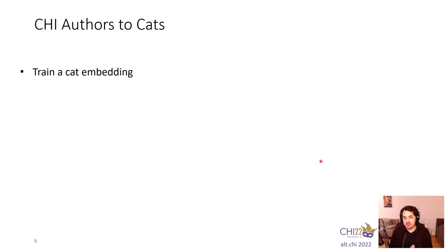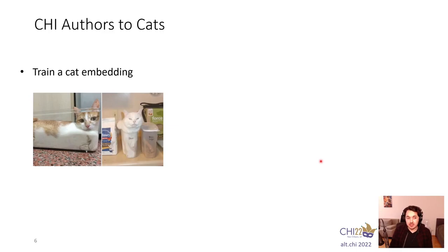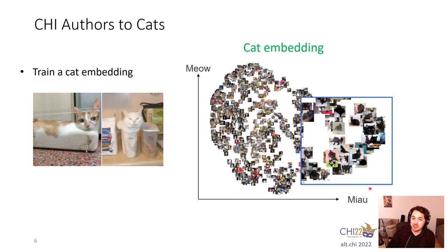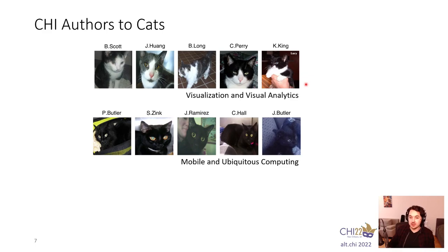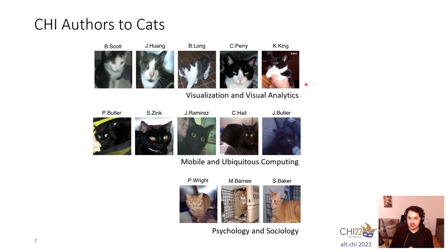Let's look at a different example: authors to cats. First, we need to train a cat embedding. Cats are very easily embedded, so it's quite straightforward. We get a nice space where similar cats are mapped to nearby points with low distances between them, and we can use this for a metaphor. As a result, we get clusters — for example, a white-gray-black cluster, where all the authors are working in visualization or visual analytics. Similarly, there's a cluster of black cats corresponding to mobile and ubiquitous computing, and a small outlier cluster with orange cats in cages corresponding to psychology and sociology — which is an appropriate metaphor.